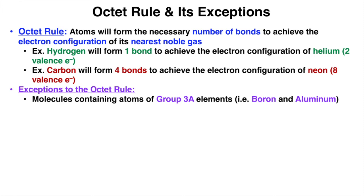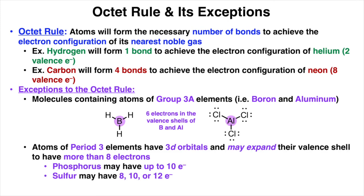But there are a few exceptions to the octet rule, especially molecules containing group 3A elements. For example, boron and aluminum have six valence electrons in their valence shell. And atoms in period 3 have 3D orbitals, which means they may expand their valence shell to have even more than eight electrons.